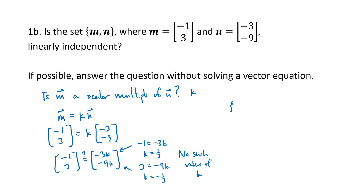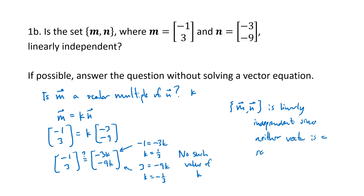So we say this set {m, n} is linearly independent, since neither vector is a scalar multiple of the other. That's the test for a set of two vectors: check whether either vector is a scalar multiple of the other. That didn't happen here, so our set is linearly independent.